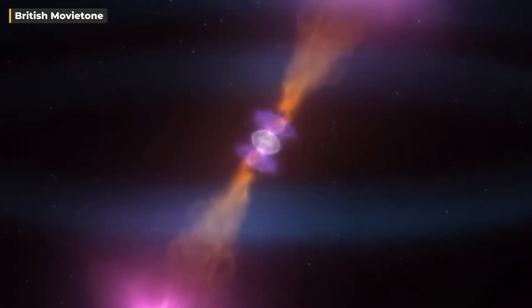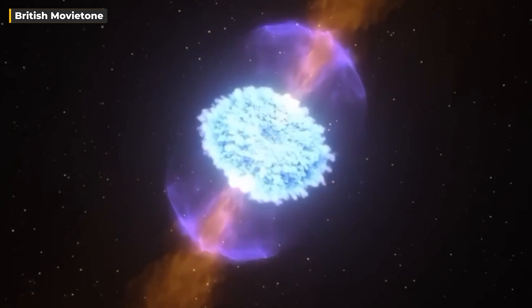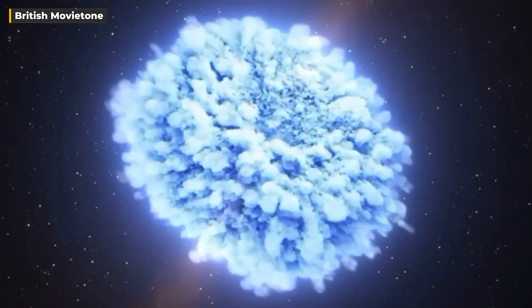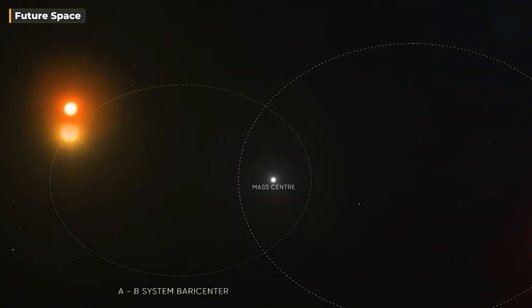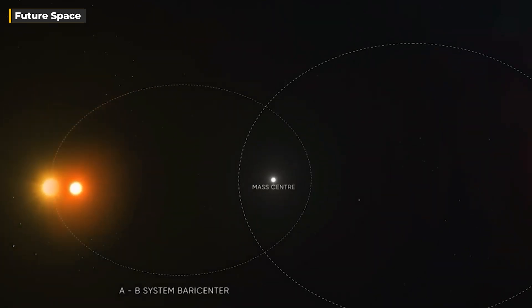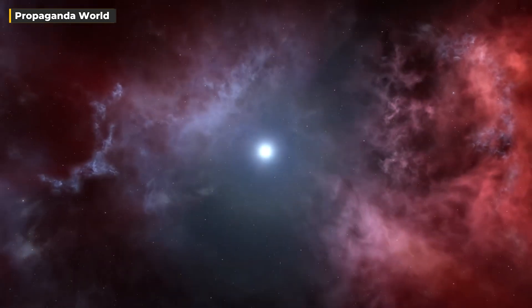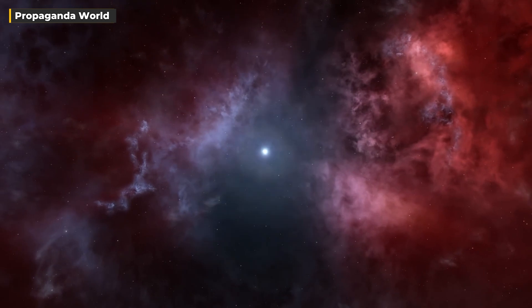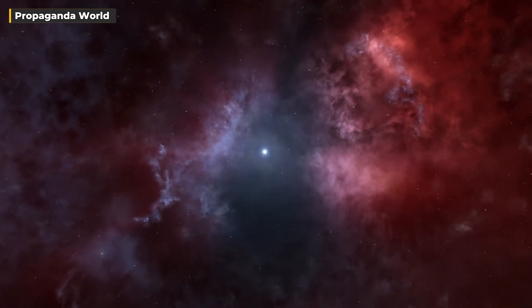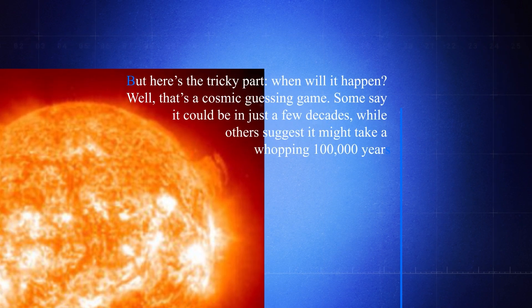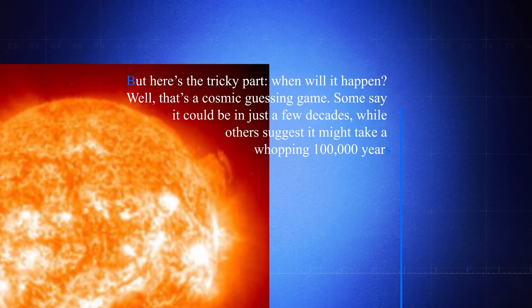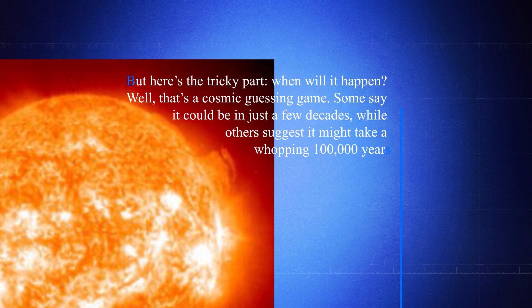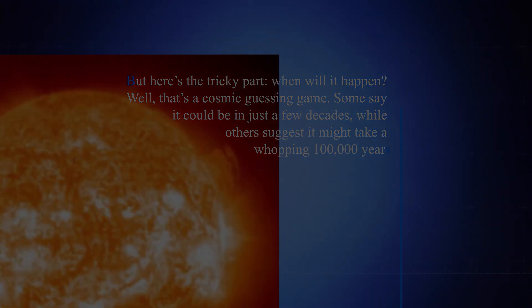Some say it's in its carbon burning phase, and the core might collapse in a few decades when its carbon runs out. But hold on, not everyone agrees. It's still in the earlier helium burning stage. One thing everyone does agree on is that Betelgeuse is destined to become the Milky Way's next supernova. But here's the tricky part. When will it happen? Well, that's a cosmic guessing game. Some say it could be in just a few decades, while others suggest it might take a whopping 100,000 years.